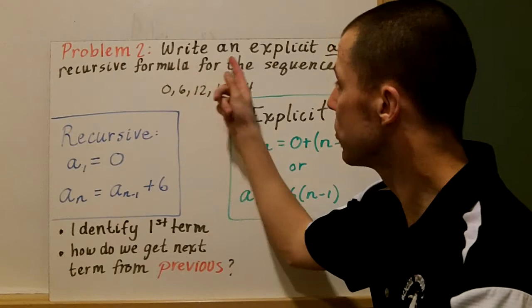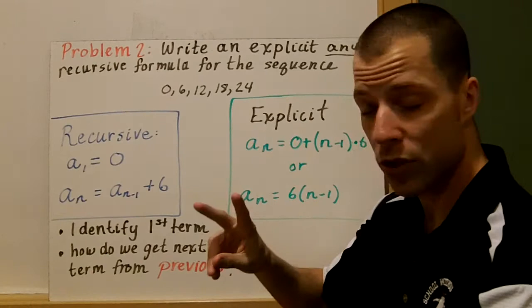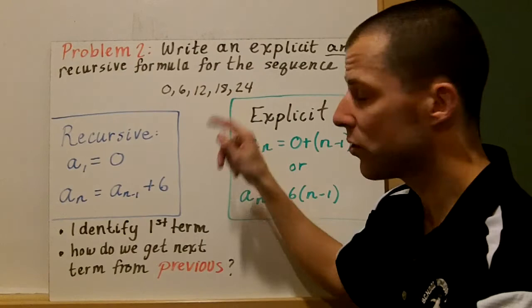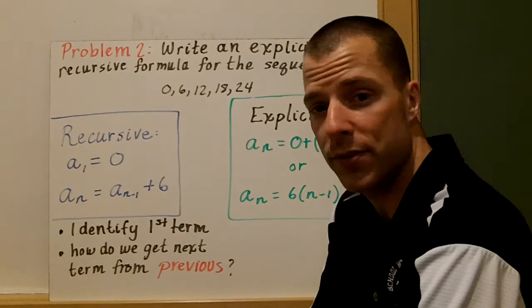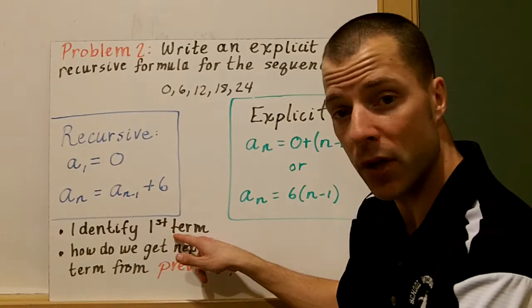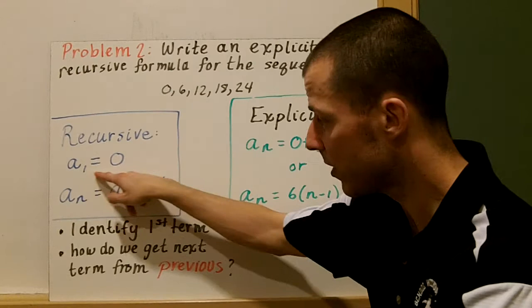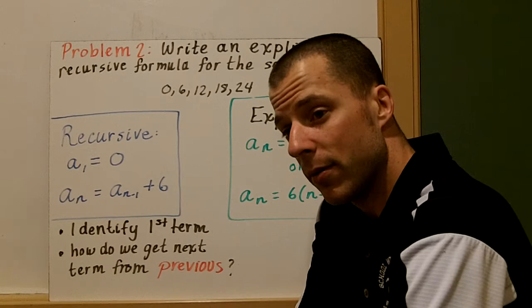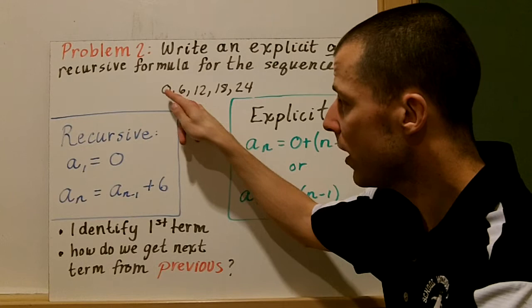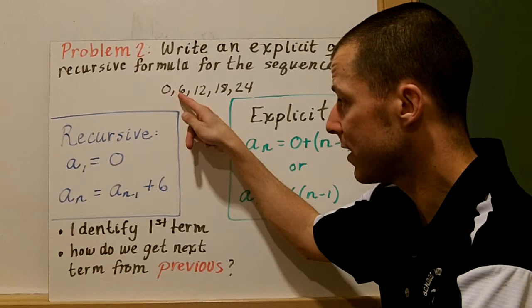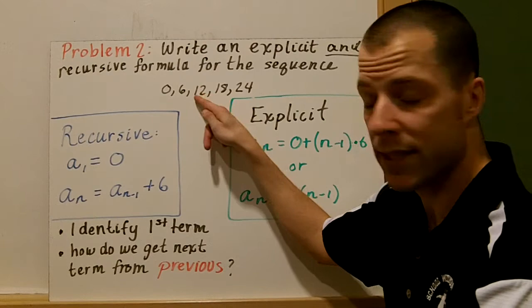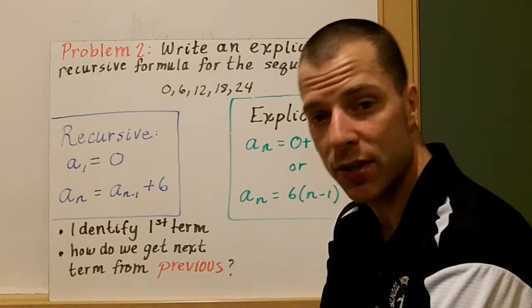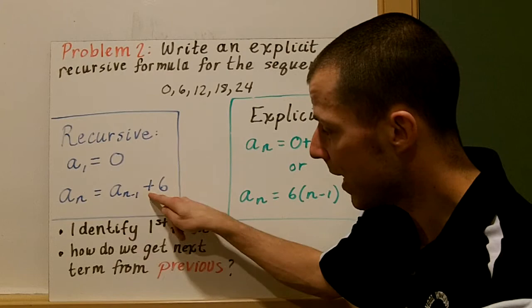Our sequence is 0, 6, 12, 18, and 24 — a finite sequence with no continuing dots. For the recursive formula, first identify the first term, which is zero, so A₁ equals 0. Then determine how to get the next term from the previous one: you add six each time. So recursively, the next term equals the previous term plus six. That's the recursive rule.